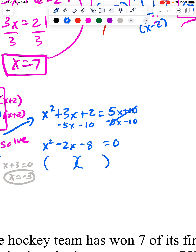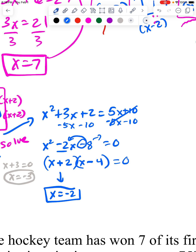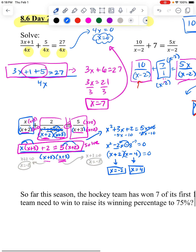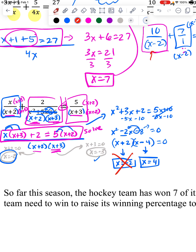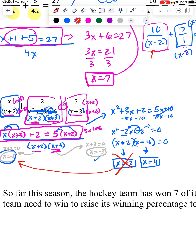It's the same process every time. I need factors of 8 that subtract to be 2: that's 4 times 2. For the middle to be negative 2, I'll use minus and plus. What makes each factor zero? x equals negative 2 and x equals positive 4. Looking back, my excluded values are negative 3 and negative 2 — so negative 2 is not a real answer. The only viable answer is x equals 4.